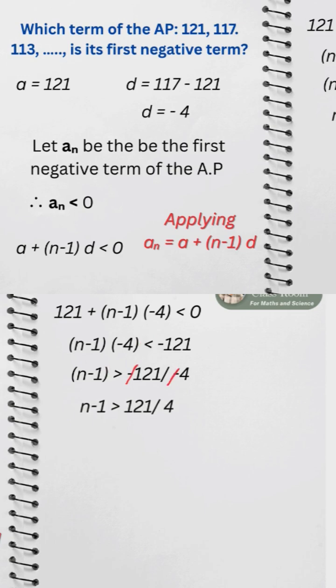On transposing to the other side and simplifying it further, we get n greater than 31 and 1 over 4. Since n has to be a natural number, the natural number which is greater than 31 and 1 over 4 is 32. Hence, the first negative term is the 32nd term.